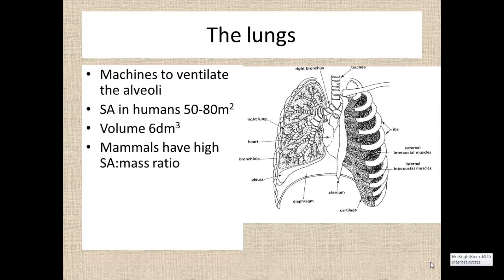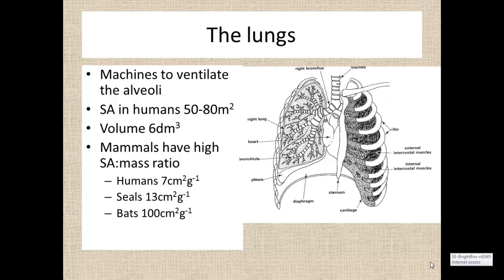Mammals do have high surface area to mass ratios. Humans have 7 centimetres squared of lung per gram of body mass. Seals have nearly twice that — 13 centimetres squared per gram — because as diving animals they need to oxygenate their blood and remove carbon dioxide very efficiently. Bats have an even higher ratio: in part because they are very light, but also because they are extremely metabolically active as flyers, and flying is very energetically expensive.